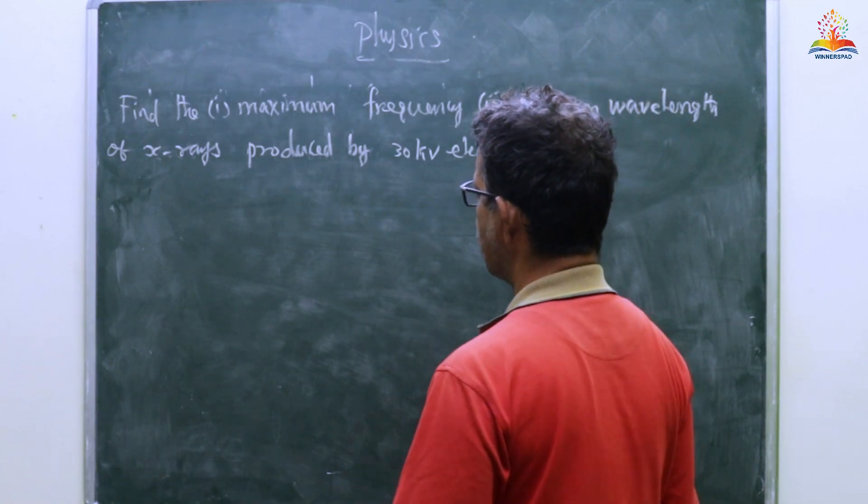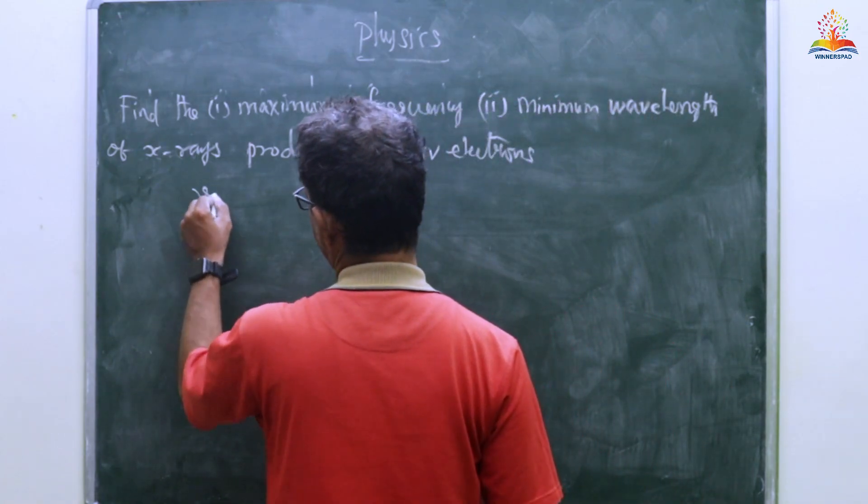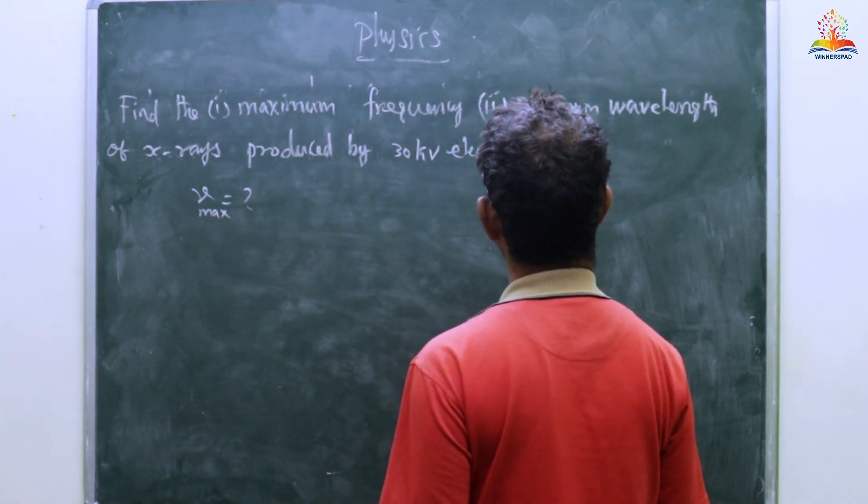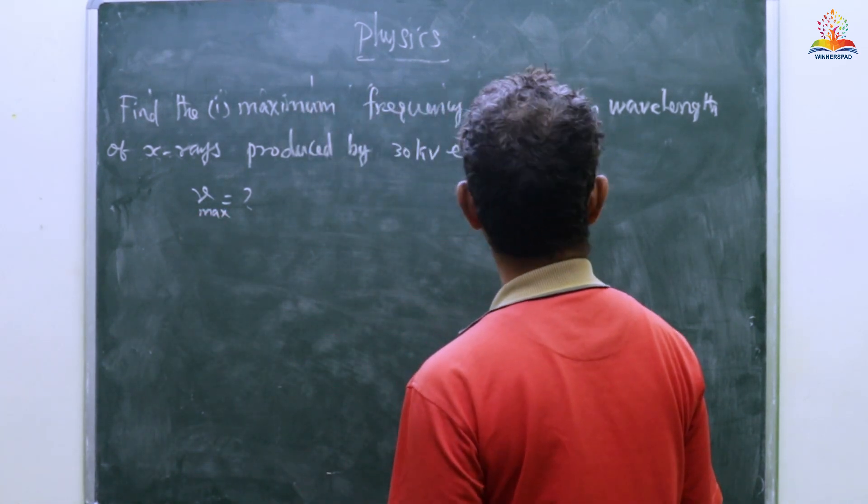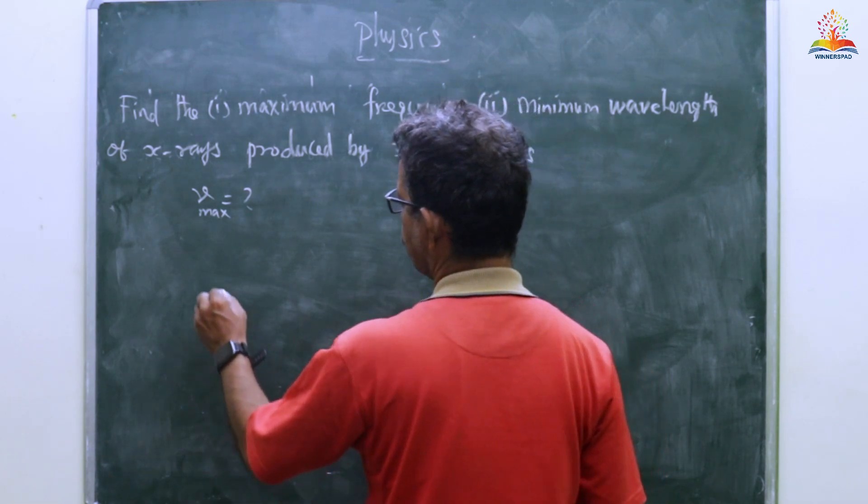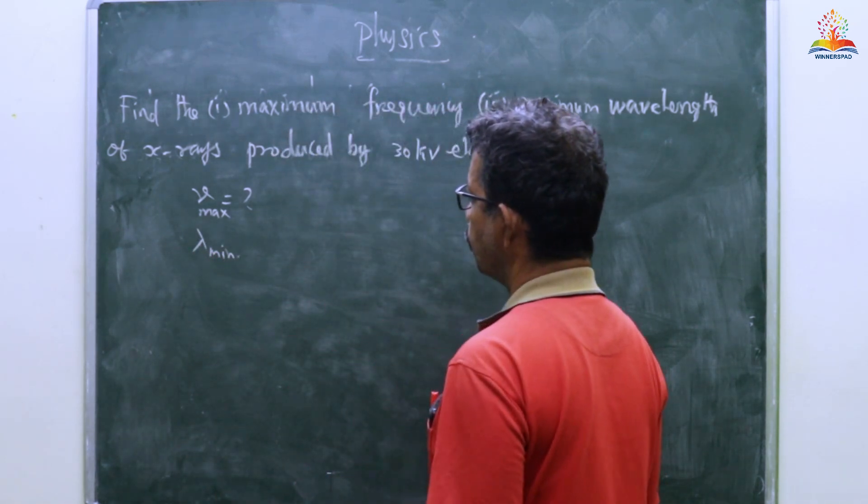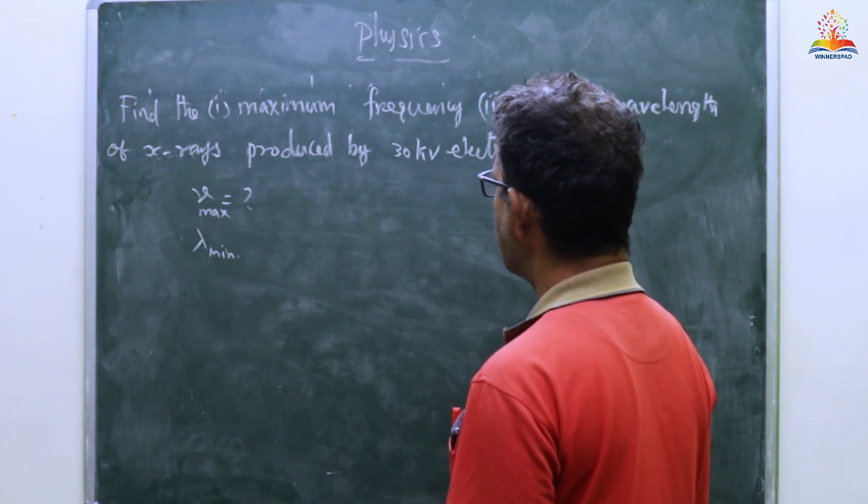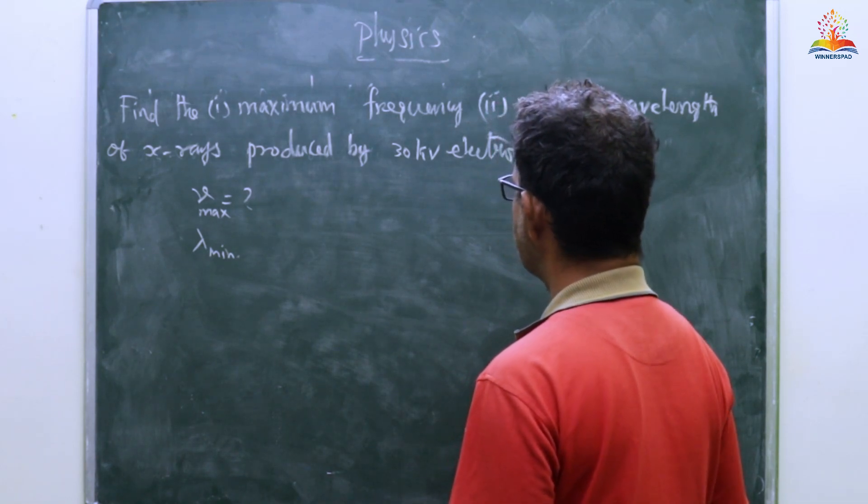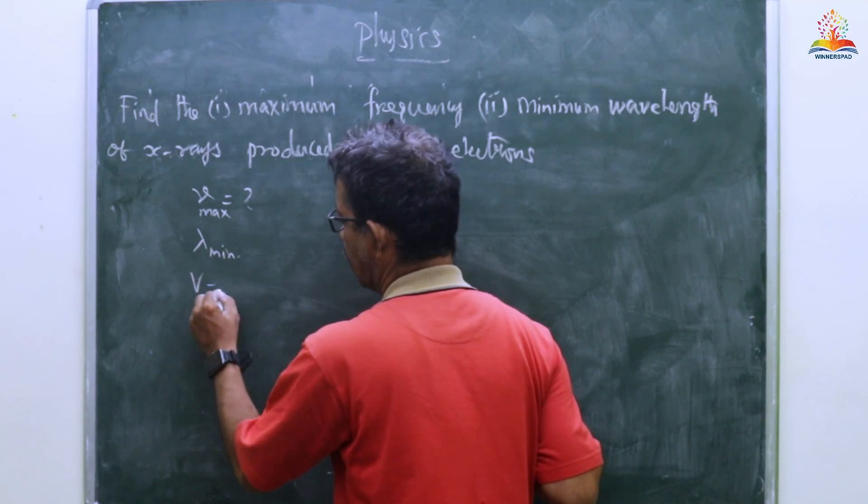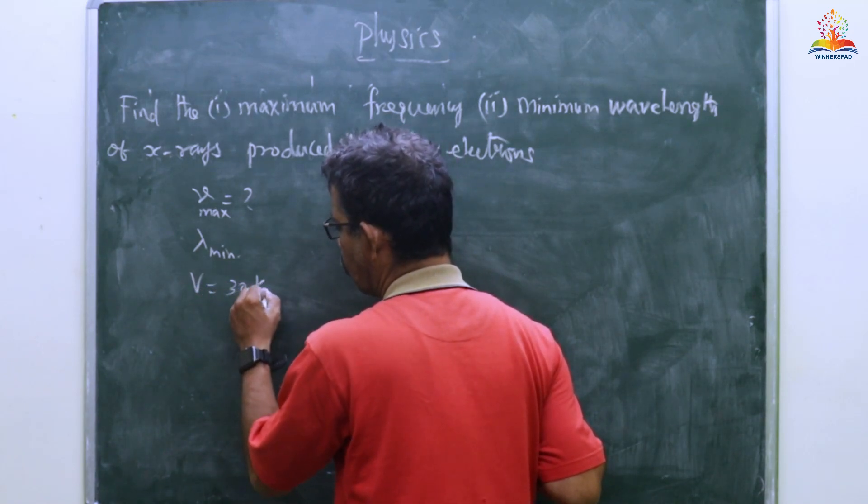Find the maximum frequency and minimum wavelength of X-rays produced by 30 kilovolt electrons.